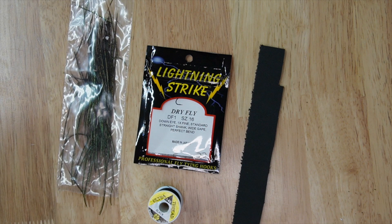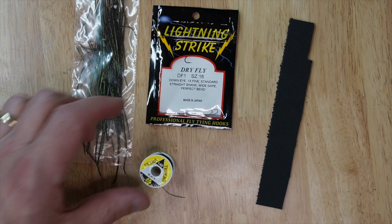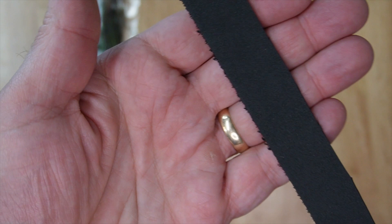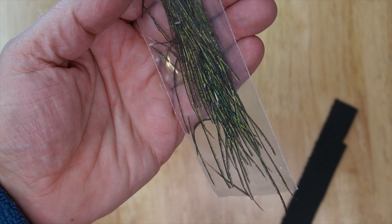Hi, today we're going to be tying the foam beetle. Let's get your supplies here. We're going to be using the black 140 thread, the size 16 DF1 hook, black foam, and peacock hurl. If you need to pause here while you get those, go ahead and do that.